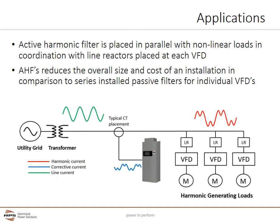Active harmonic filters are placed in parallel with non-linear loads, which are typically variable frequency drives. Typically, each VFD also has a line reactor installed in these applications. Active harmonic filters reduce the overall size and cost of an installation in comparison to a series-installed passive filter, which is much larger than line reactors and needs to be installed for each individual VFD.